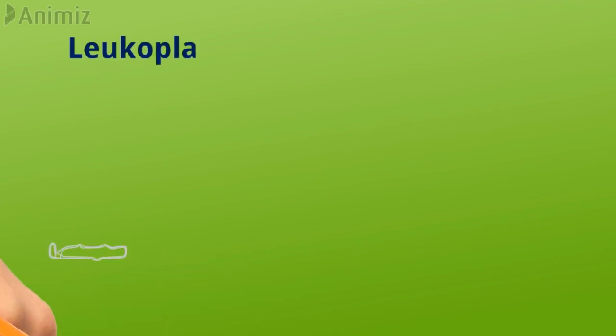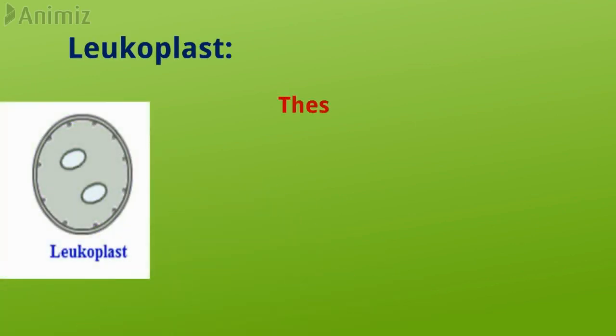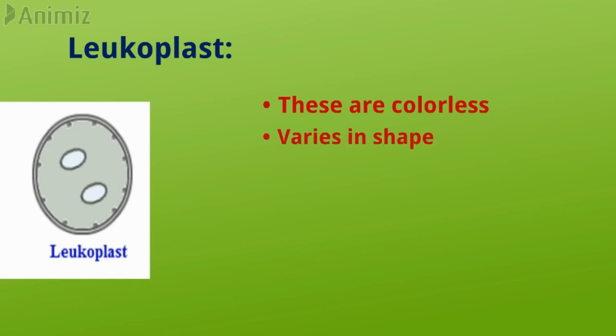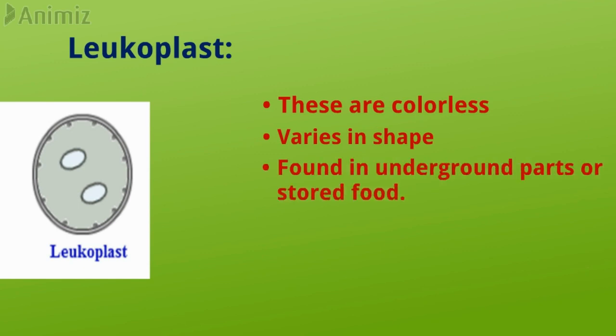The third and last type of plastid is the leucoplast. Leucoplasts are colorless and can be triangular, tubular, or some other shape. They are found in the underground parts of the plant and store food.